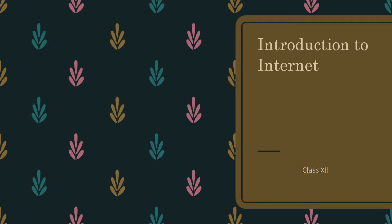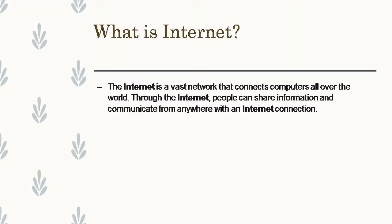What is a network? A network is nothing but connecting two or more computers to share resources, share data, and to communicate with each other. This network is categorized into LAN, MAN, and WAN. WAN means wide area network — one complex network connected with another forms a wide area network. The combination of all these networks forms a complex network called the internet.